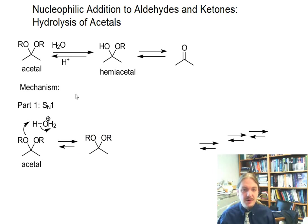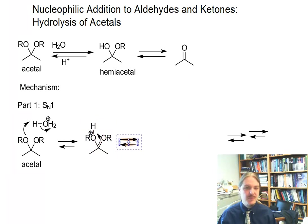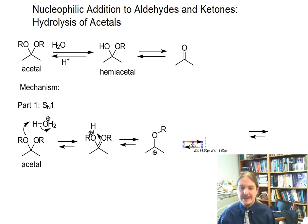We start off by protonating one of our acetal oxygens. This makes it a better leaving group, and because this is an SN1 reaction, that leaving group can leave. We form a resonance-stabilized carbocation intermediate. This carbocation intermediate also has a resonance structure where there's a carbon-oxygen double bond and the positive charge is on the oxygen.